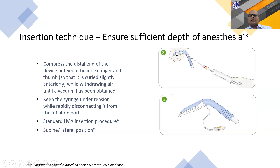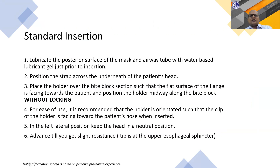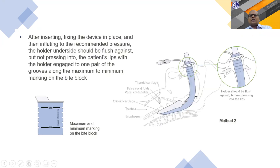The insertion technique is the same as a normal LMA. The manufacturer recommends compressing the distal end between the index finger and thumb so the tip is curved slightly anteriorly. The key difference is that we do not blindly inflate with 20 or 30 ml—instead, we titrate the cuff volume to achieve a cuff pressure of 40 to 60 cmH2O. After insertion, the LMA pops up slightly; connect it to the breathing circuit and confirm a good EtCO2 trace with no leak.